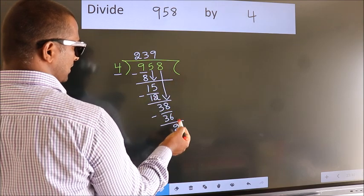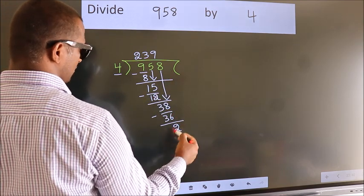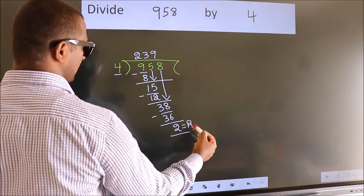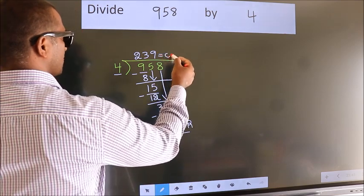No more numbers to bring it down. So we stop here. This is our remainder. This is our quotient.